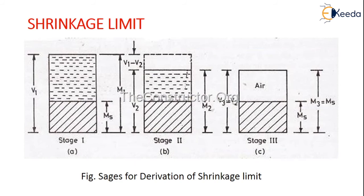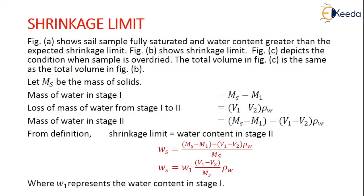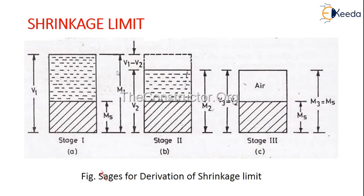Coming to the shrinkage limit — these are the different stages for derivation: stage 1, stage 2, and stage 3. Figure A shows a soil sample fully saturated with water content greater than the expected shrinkage limit. Figure B shows the shrinkage limit condition. Figure C shows the sample over-dried; the total volume in figure C is the same as in figure B — the total volume does not change between figures B and C.